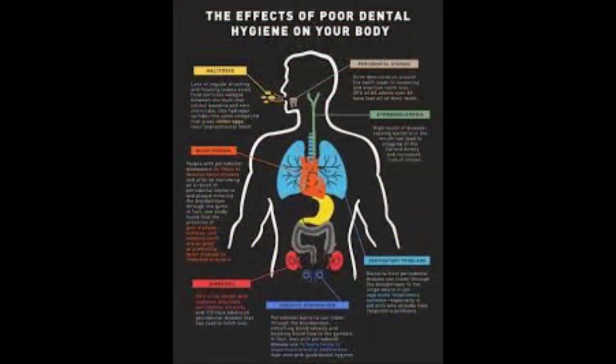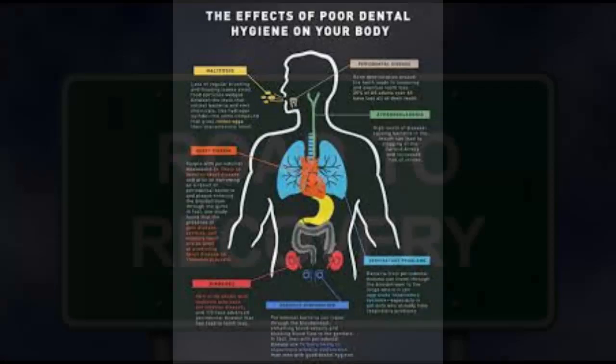We're also worried about that same type of bacteria affecting the rest of your body and systemic health. People with chronic inflammation — the inflammatory cells and the bacteria present in periodontal disease — can get into the bloodstream, causing a bacteremia. This puts you at a higher risk of heart attacks, stroke, low birth weight babies, and early-term deliveries. There are a lot of reasons why we would want to do periodontal therapy.